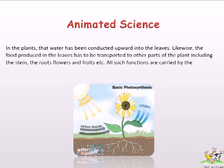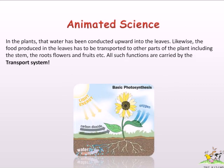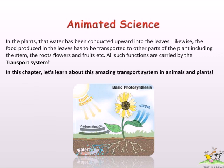In plants, water is conducted upward into the leaves. Likewise, the food produced in the leaves has to be transported to other parts of the plant, including the stem, the roots, and fruits, etc. All such functions are carried out by the transport system. In this chapter, let's learn about this amazing transport system in animals and plants.